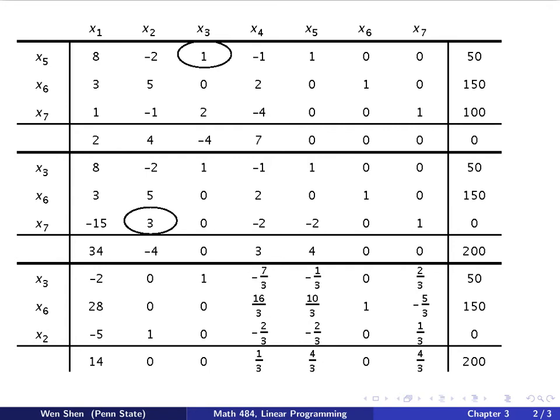Now, going through step one again, let's look at all the coefficients in the objective function. We see 14, 1 third, 4 thirds, 4 thirds. Nothing is negative here. Then we conclude that we have reached the minimum. The minimum value will be negative 200, obtained at this basic solution, where this is x3, this is x6, and this is x2, and the non-basic variables x1, x4, x5, and x7, they're all 0.